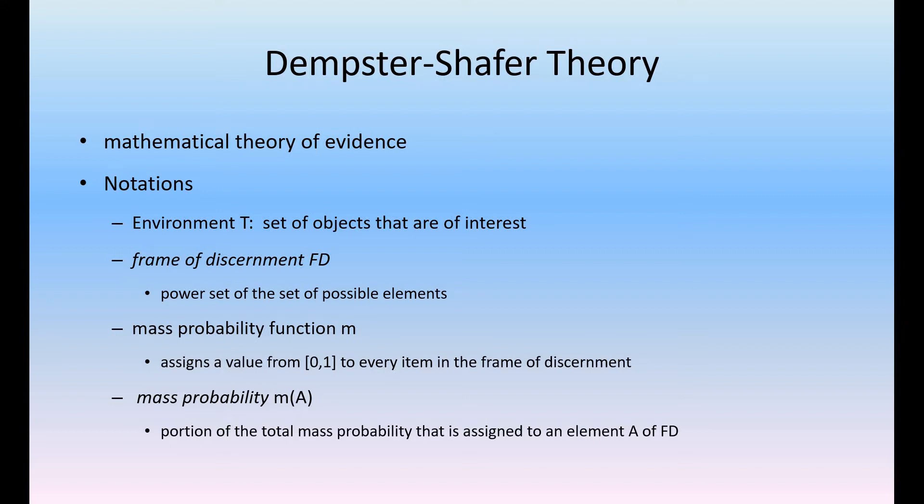What are the notations we use normally while working with the Dempster-Shafer theory? Notation one is the environment, the set of objects that are of interest. The second one is the frame of discernment FD, which we can describe with the help of some power sets.